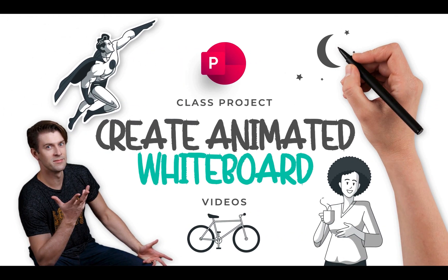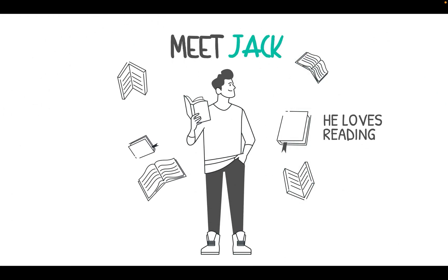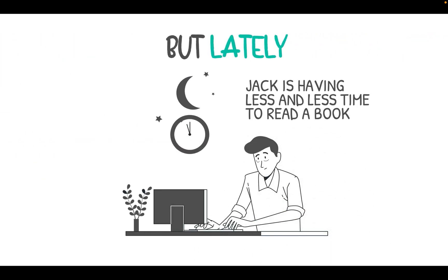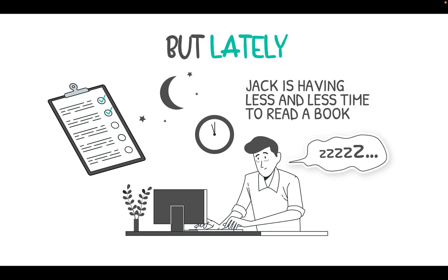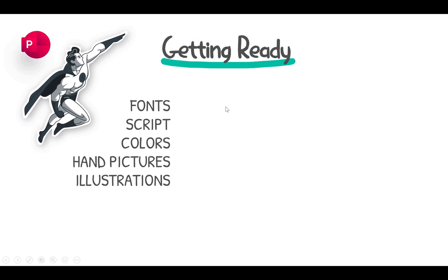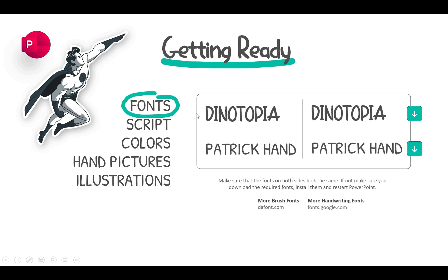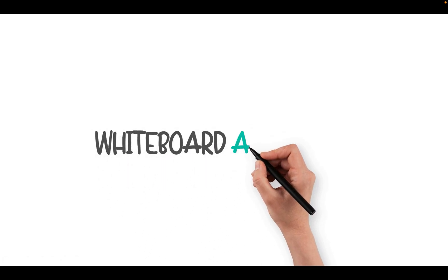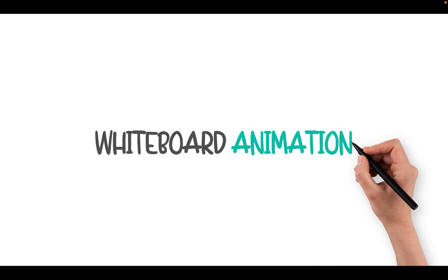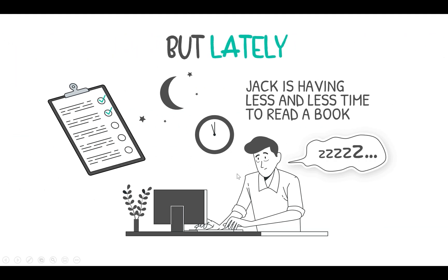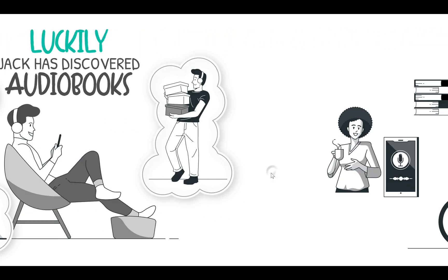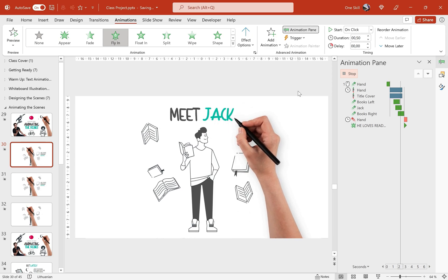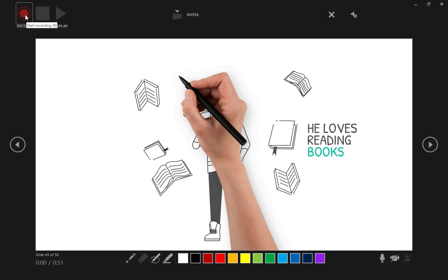Alright, so for our class project we'll be creating an animated whiteboard explainer video in PowerPoint. I will walk you through the different stages of creating a whiteboard animation video. First, we will get ready and make sure that we have everything we need for a great start. After that we will warm up and learn the main whiteboard animation techniques for text and illustrations, then design the scenes for our video, add animations, voiceover, background music and sound effects.